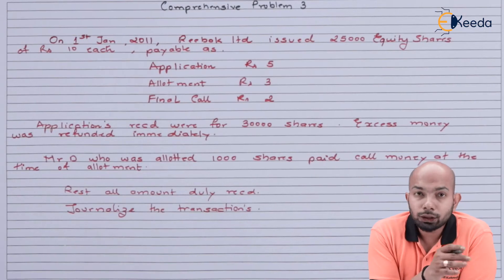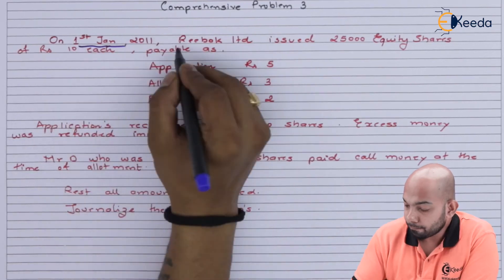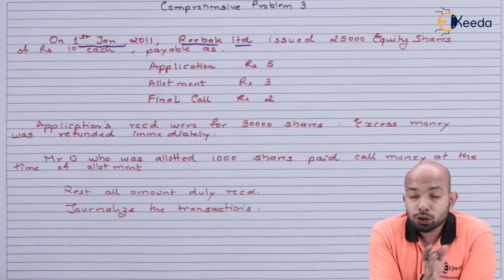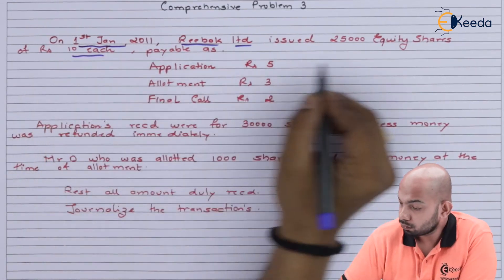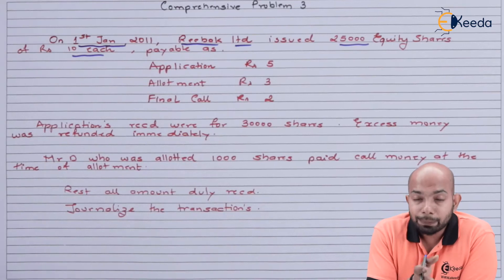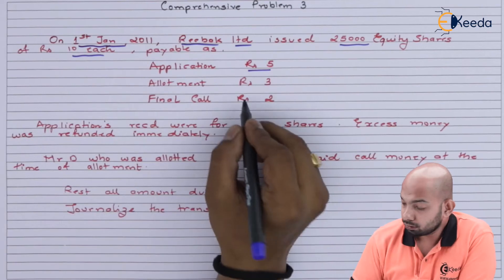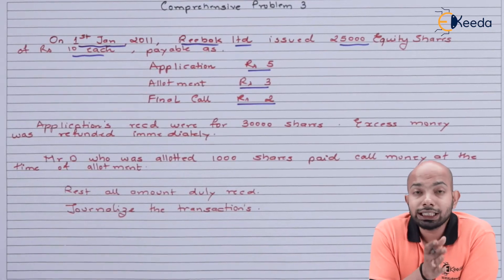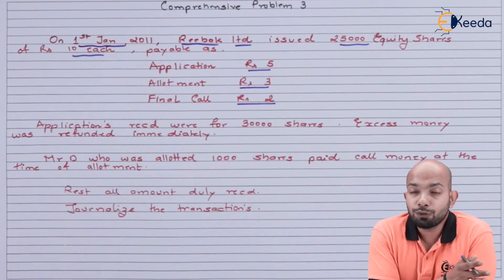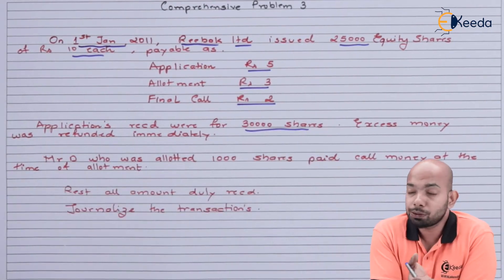The illustration refers to 1st January 2011 related to Reebok Limited. On that date, Reebok Limited issued 25,000 equity shares at rupees 10 each, payable as follows: rupees 5 on application, rupees 3 on allotment, and rupees 2 on final call. Applications were received for 30,000 equity shares — a clear case of oversubscription.